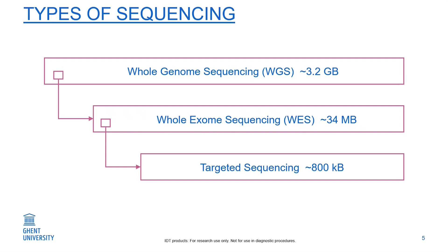To further drop the sequencing cost of exome sequencing, we can do targeted sequencing. In this approach, we only sequence specific genes of the genome — genes of interest. In this manner, we also drop the cost a further two orders of magnitude. The disadvantage of targeted sequencing is that in each specific situation, we need another panel that is applicable for that specific research.